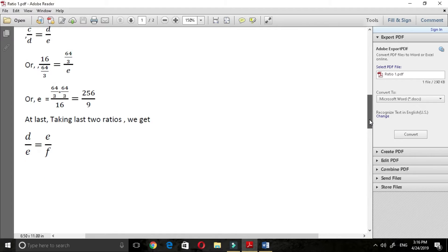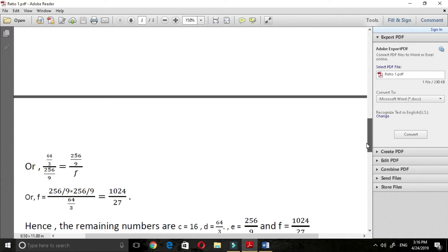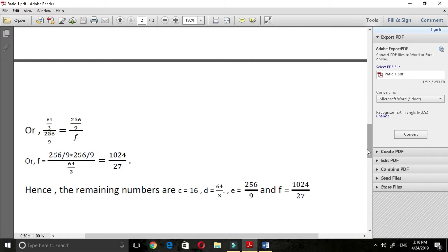taking last two ratios, we get d by e is equal to e by f and after putting the value of d and e, we get the value of f is equal to 1024 upon 27.